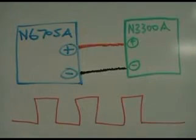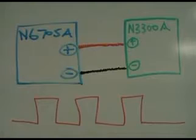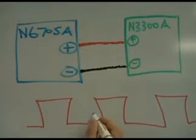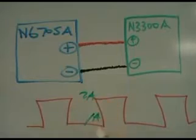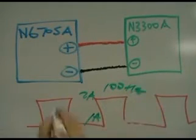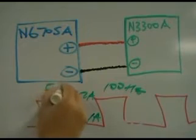The setup for this is really simple. We have an N67058 DC power analyzer connected to a N3300A electronic load. In this video example, we're going to go from 1A to 2A at 100Hz with a duty cycle of 50%.